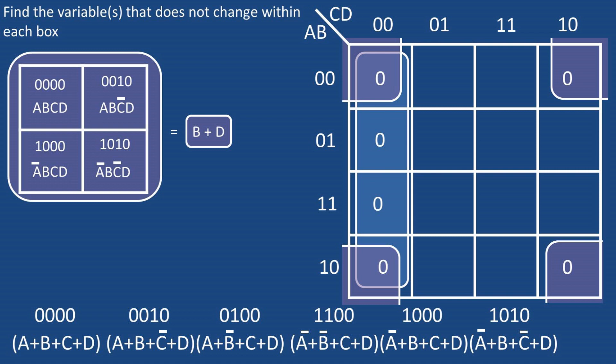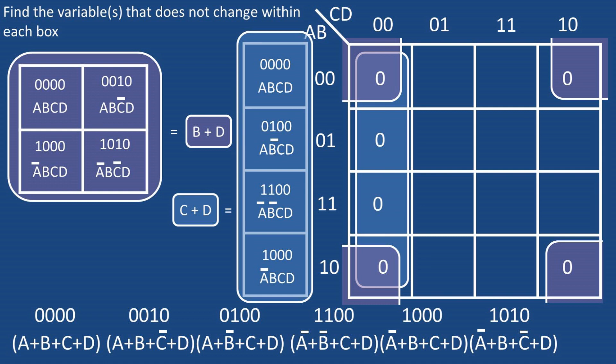Now for the blue box that is wrapping around the values in column one, the only values that do not change are C and D, so the box can be reduced to C+D, or C OR D.